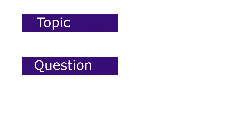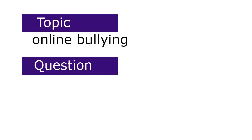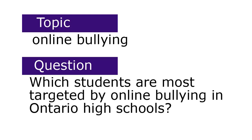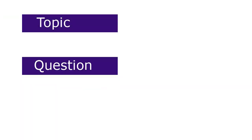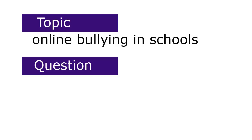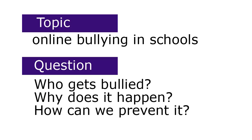Most people first start with an idea about a topic, and then develop a research question on that topic. For example, if our topic is online bullying, one question could be which students are most targeted by online bullying in Ontario high schools. You can ask many questions about any topic. If we are interested in online bullying in schools, we could ask who gets bullied, why it happens, or how we can best prevent it. Picking one of those questions defines the focus of your research and the angle you're going to take.